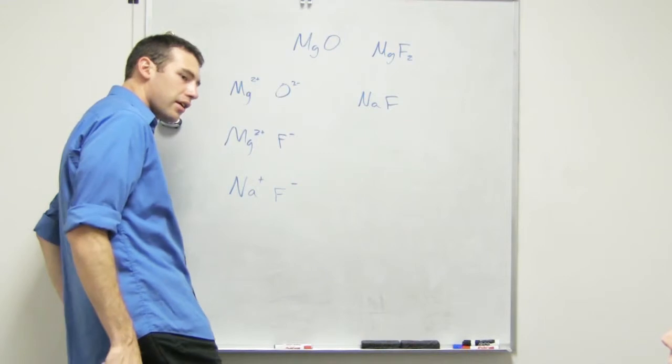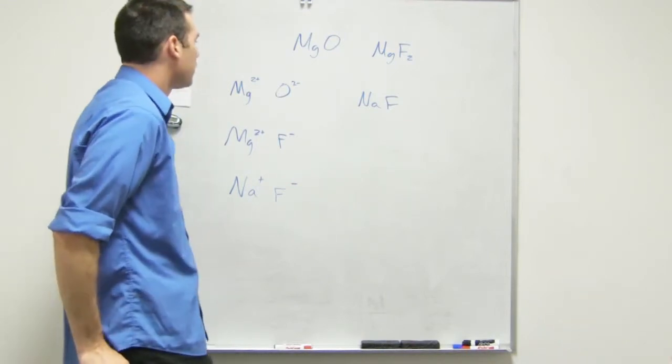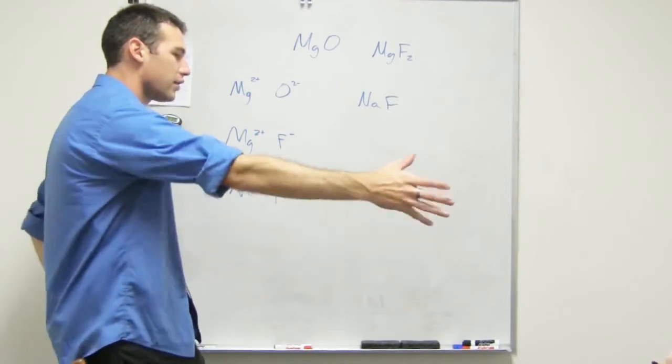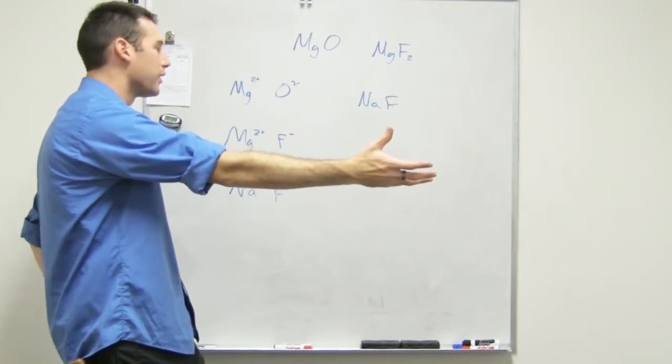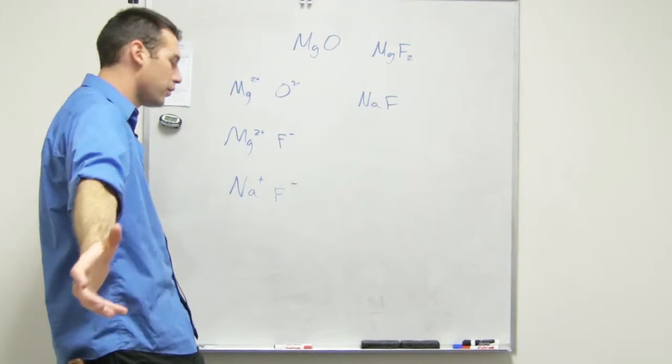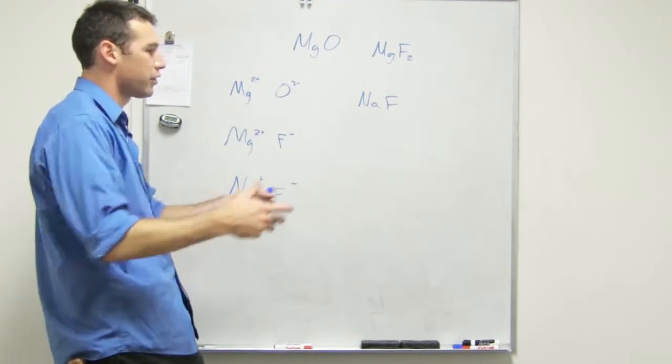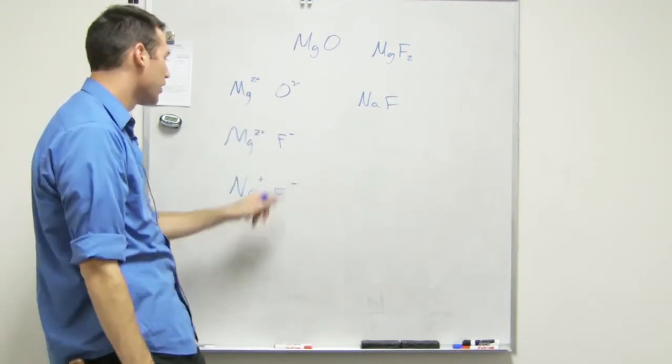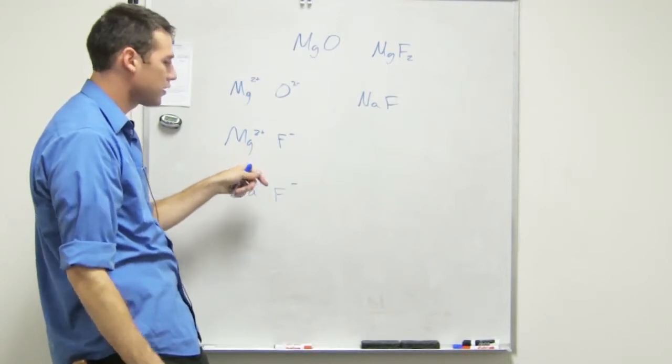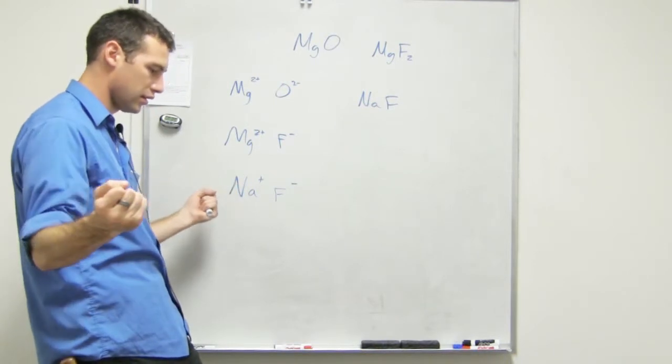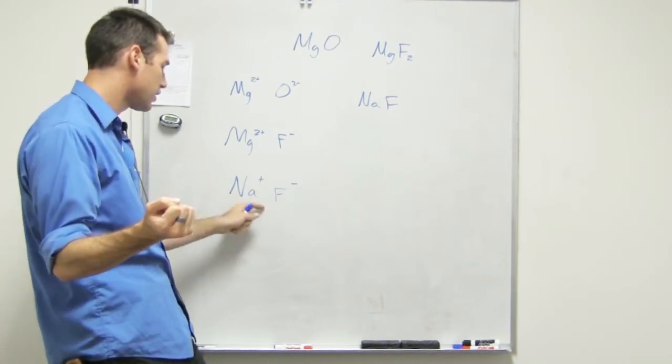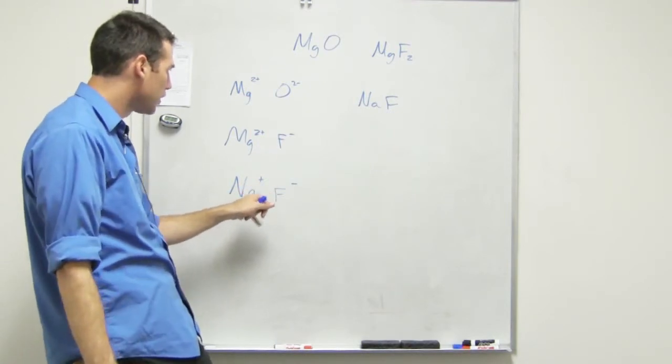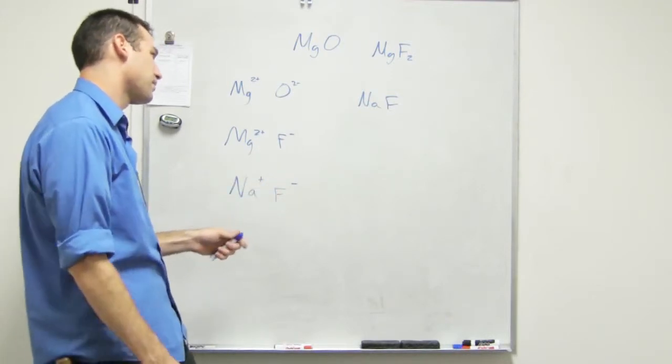So the more ion charge it has, the harder it is to break apart. Just think about it as hands. Here you're holding on to one person with one hand and they're holding on to you with one hand. Here you're holding on to two people, one hand each. Here you're holding on to the same person with both hands. Which one's stronger? This one's stronger because this guy is using both hands—he's not pulled towards one side more, it's perfectly balanced. This guy is kind of off-center. So this guy is actually going to be the first one to be pulled apart.